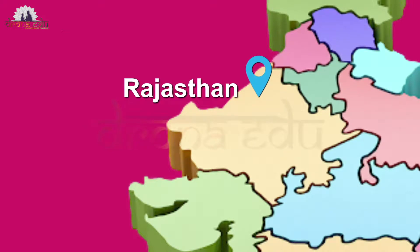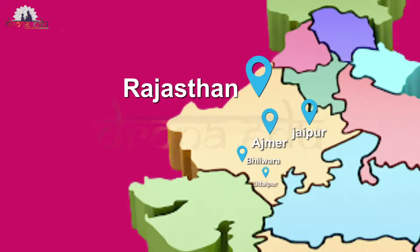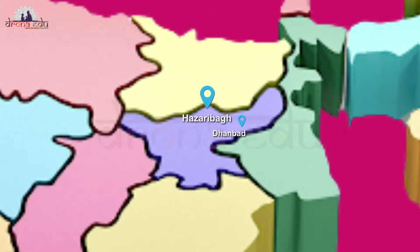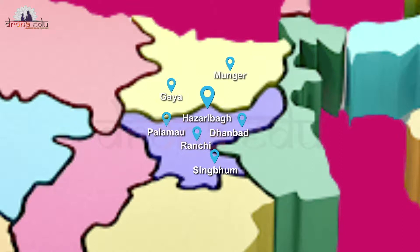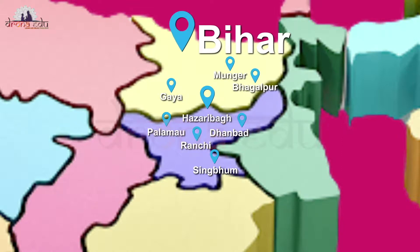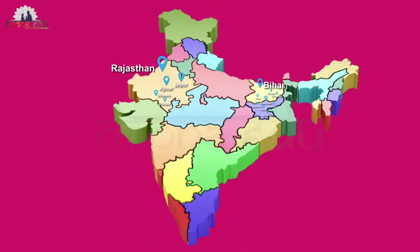Rajasthan, which is the second largest producer of mica, has deposits mainly found in the districts of Jaipur, Ajmer, Bhilwara and Udaipur. Hazaribagh, Dhanbad, Palamau, Ranchi and Singhbhum in Jharkhand. Gaya, Munger and Bhagalpur in Bihar are the most important producers of mica.